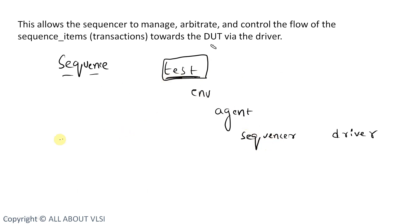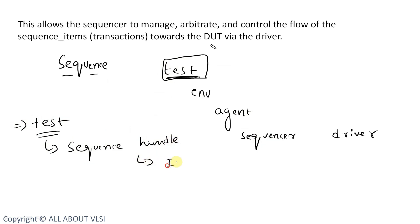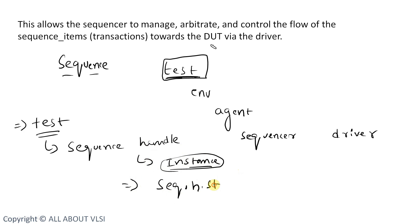In the test class, first we declare the sequence handle, then create an instance using that handle. After creating the instance, we call the start method on it — for example, sequence_h.start() — and pass the path to the sequencer as the argument of the start method.